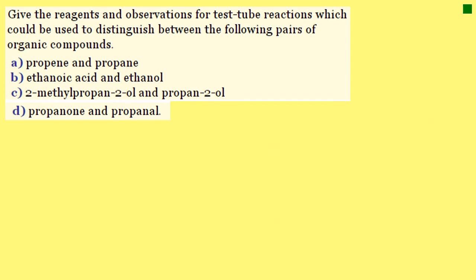Another question: give the reagents and observations for test tube reactions which could be used to distinguish between the following pairs. Part A is propene and propane — propene is an alkene versus propane which is an alkane. We could use the bromine water test for those double bonds in the alkene, and we would see the orange colour disappear to colourless. That can be done at room temperature.